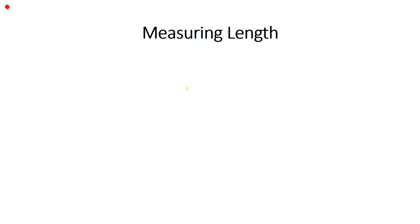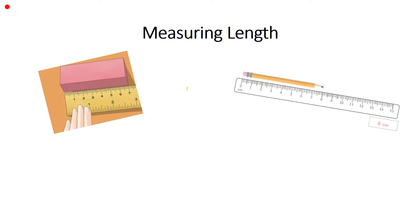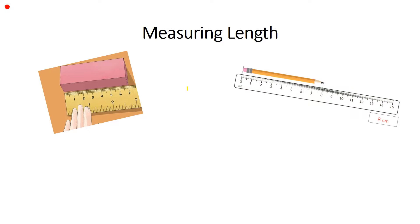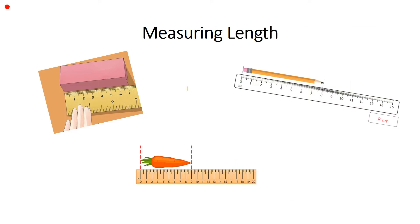Measuring length. In physics, length is extremely important as it will help us to calculate certain values and determine certain variables. There are many ways to measure length. One of the most basic methods is by using a meter rule, which is basically just a ruler that is a meter long. You can use it to measure a block, a pencil, or even a carrot.